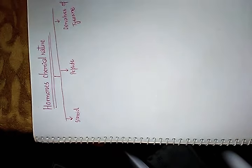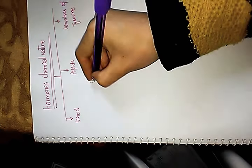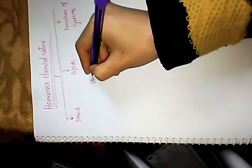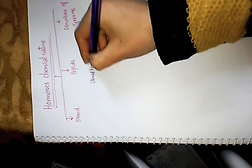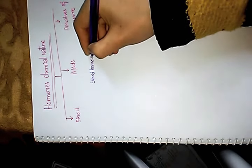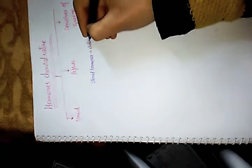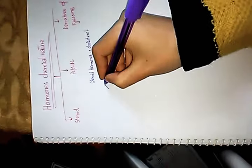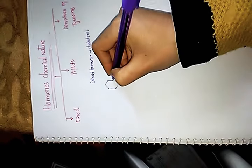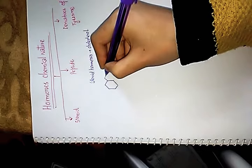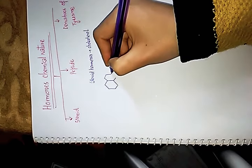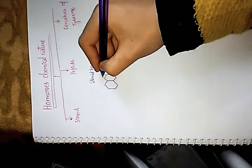Steroid hormones are derivatives of cholesterol — that means they are synthesized from cholesterol. The structure of cholesterol consists of three cyclohexyl rings and one pentyl ring.